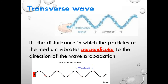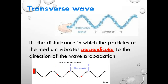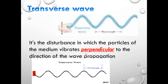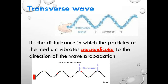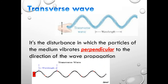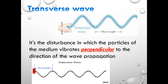Let's start with transverse waves by doing an activity using a rope. The rope moves up and down. The disturbance of the medium particles vibrates perpendicular to the direction of wave propagation. The wave propagates from left to right, while the particles move up and down. So the particle motion is perpendicular to the direction of wave propagation.